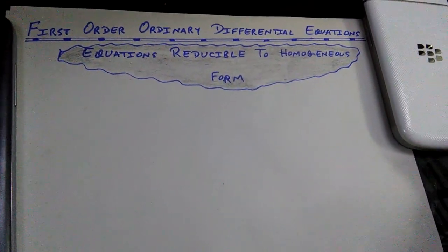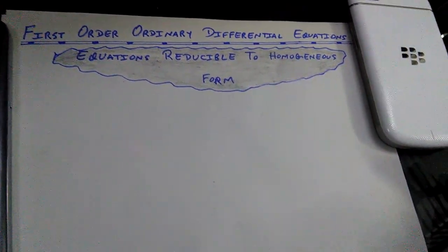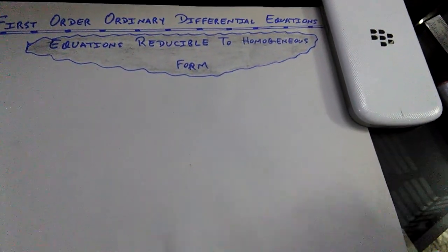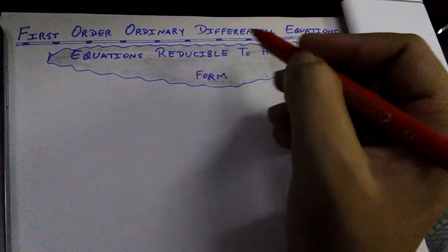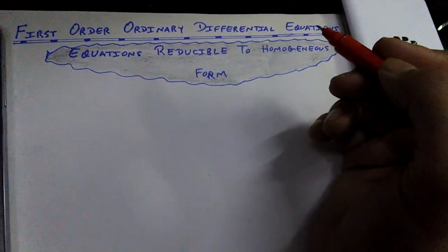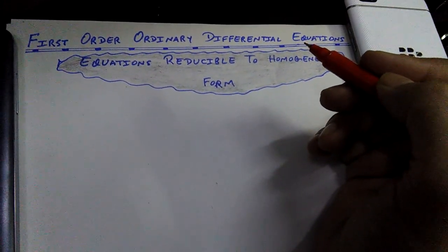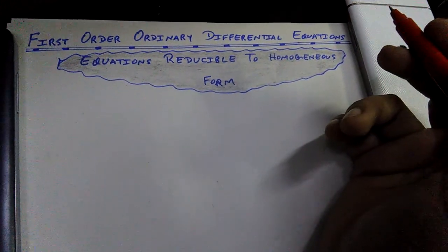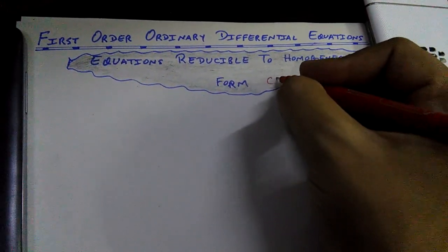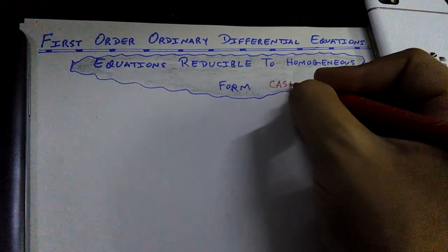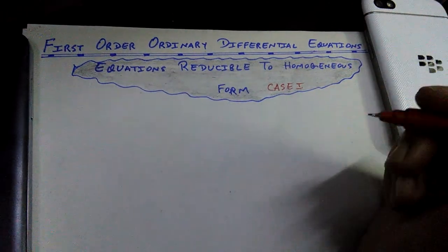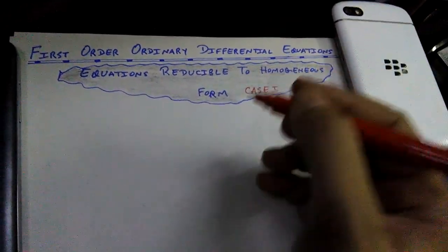Bismillah ar-Rahman ar-Rahim. Assalamu alaykum viewers. Welcome to my channel. In today's video we are going to discuss Case 2 of how to reduce a non-homogeneous ordinary differential equation of first order into a homogeneous form. Case 1 has already been discussed — you can find the link in the description box.